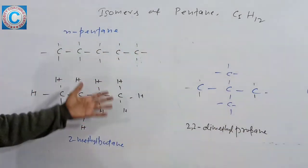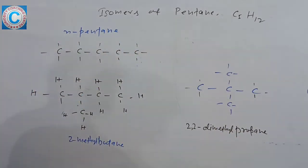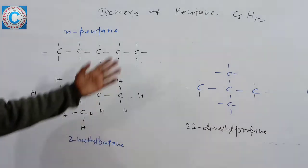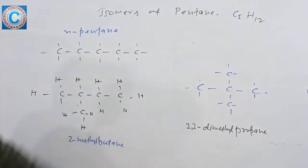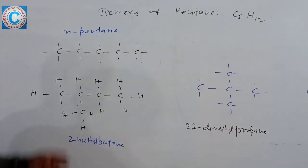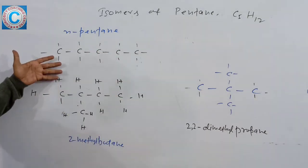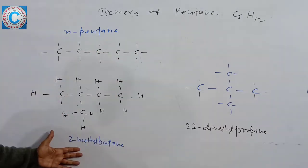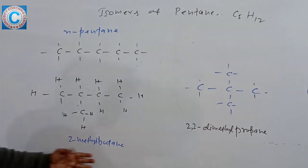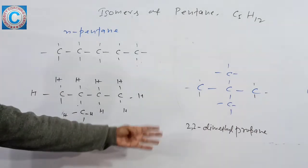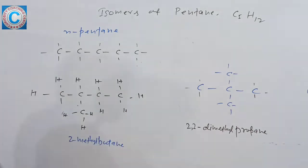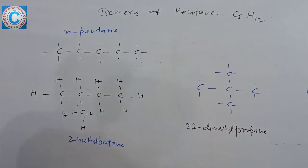So these are the 3 isomers of pentane, that is C5H12: normal pentane, 2-methylbutane, and 2,2-dimethylpropane.